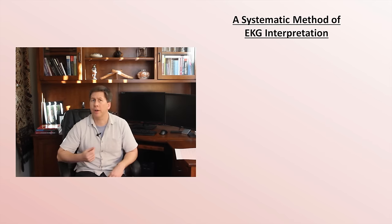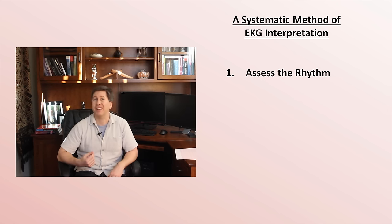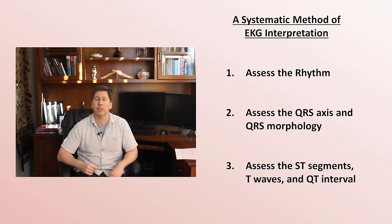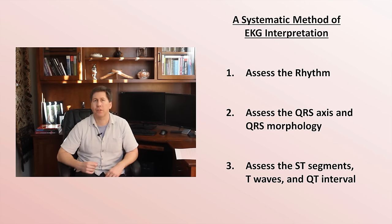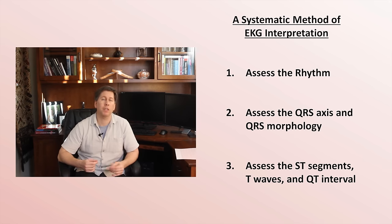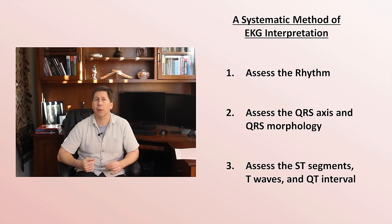My approach has three steps. Number one, assess the rhythm, which will incorporate a measure of the rate since the rate does not stand in isolation from the rhythm. Number two, assess the QRS complex, meaning both the axis and the QRS morphology. Number three, assess the ST segments, T waves, and QT interval, since abnormalities of these have strongly overlapping etiologies and physical appearance. This approach focuses on individual waveform abnormalities instead of diagnoses, so you won't forget that changes in the waveforms can be caused by things other than hypertrophy and infarction. Please be aware that I'll be assuming some basic knowledge of EKGs already.